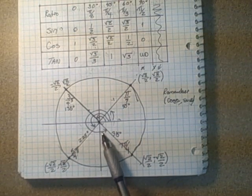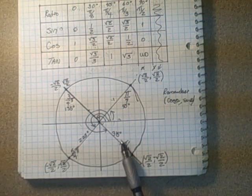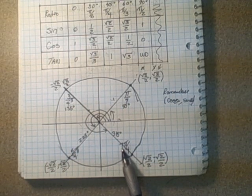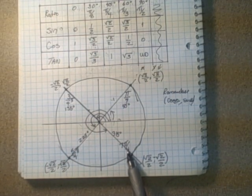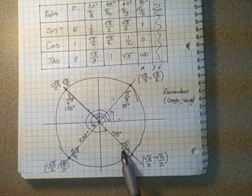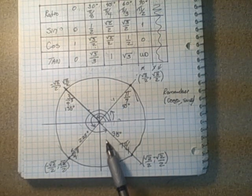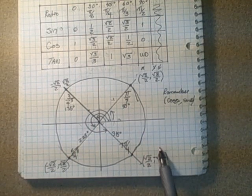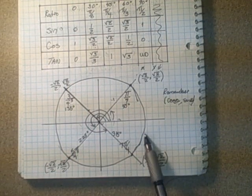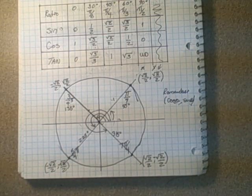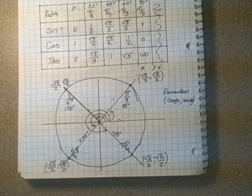In the fourth quadrant, another 45-degree angle, which is 315 degrees, or 7π/4 radians. Which one is negative? Because it's going down, the y is negative and the x is positive. So we've derived all the values for 45 degrees in the unit circle.